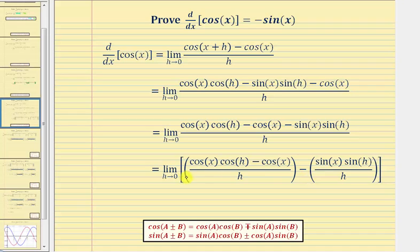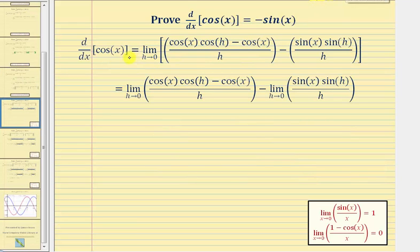Now for the next step, because we have a limit of a difference, we can write this as a difference of two limits. So we have the limit as h approaches zero of the first fraction minus the limit as h approaches zero of the second fraction.